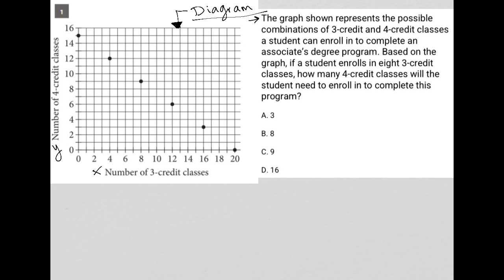The graph shown represents the possible combinations of three-credit and four-credit classes a student can enroll in to complete an associate's degree program. I like to make sure that after I read the description of what the diagram is saying, that I actually do understand it.